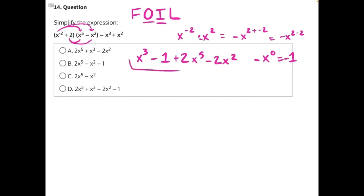Now there are no like terms to combine. So we just need to put these in order of greatest exponent to least exponent. Starting with two x to the fifth as our greatest exponent. Then x to the third. Negative two x squared. And then our constant which doesn't have an exponent value negative one.